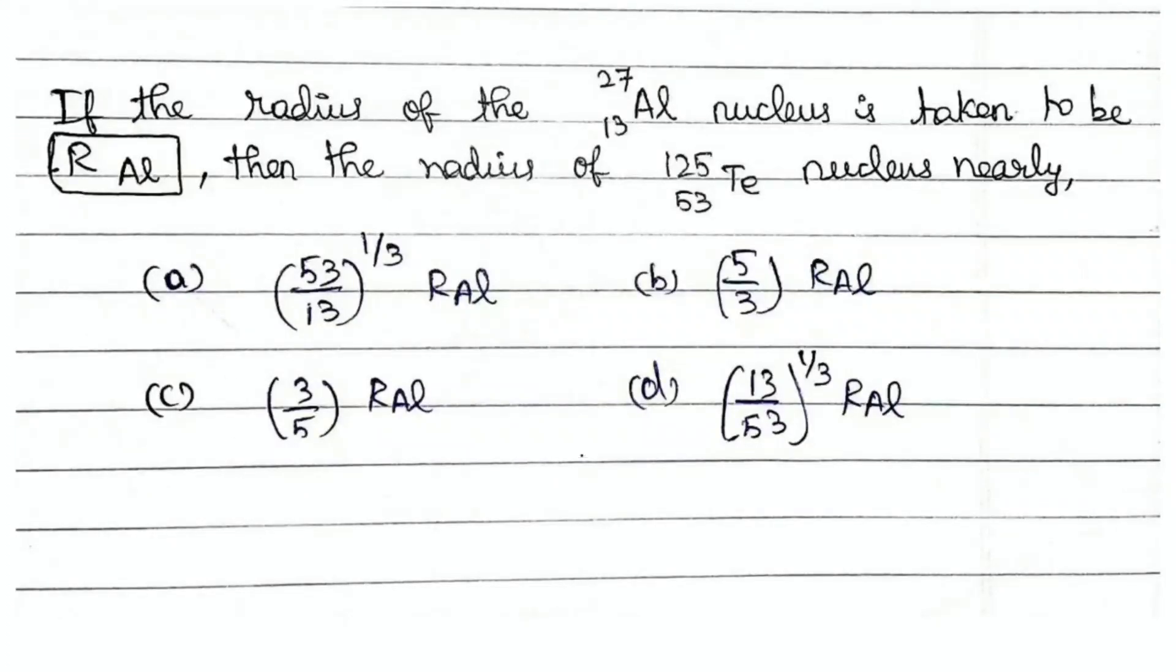So, what we know is the radius. What is the radius of aluminum? RAL is the radius of my aluminum and RTE is the radius of the tellurium.